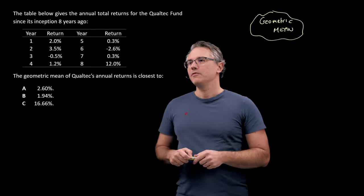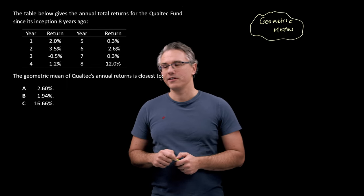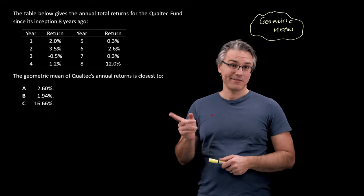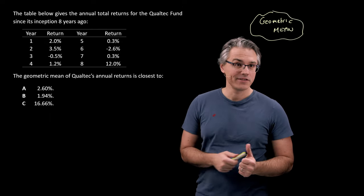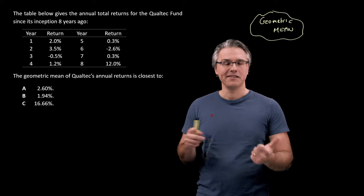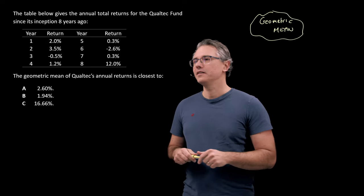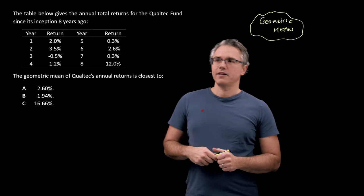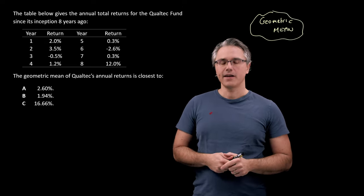The table below gives the annual total returns for the Qualtech Fund since its inception eight years ago. So this is data you've seen in previous questions if you watched the ones on the median, the mode, and the arithmetic mean. And the question is, the geometric mean of Qualtech's annual returns is closest to.